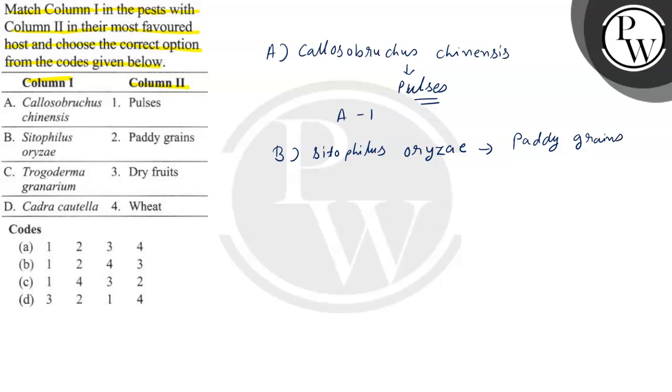What is C? Trogoderma granarium. So what will be its host? Wheat. So C will be 4.